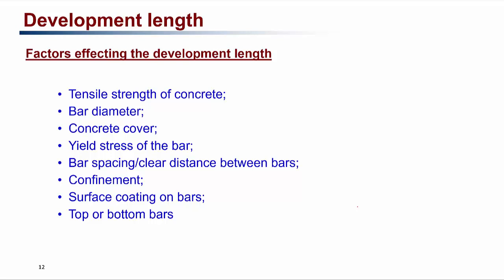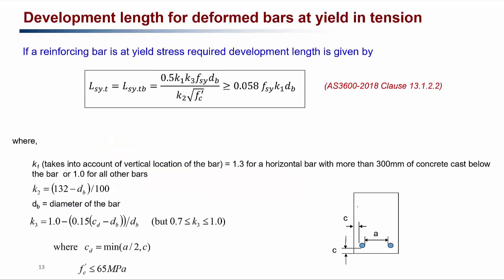The factors affecting development length in a reinforced concrete beam include the tensile strength of the concrete, diameter of the bar, concrete cover, yield strength of the bar, bar spacing, clear distance between bars, confinement, surface coating of the bars, and whether the bar is a top or bottom bar.